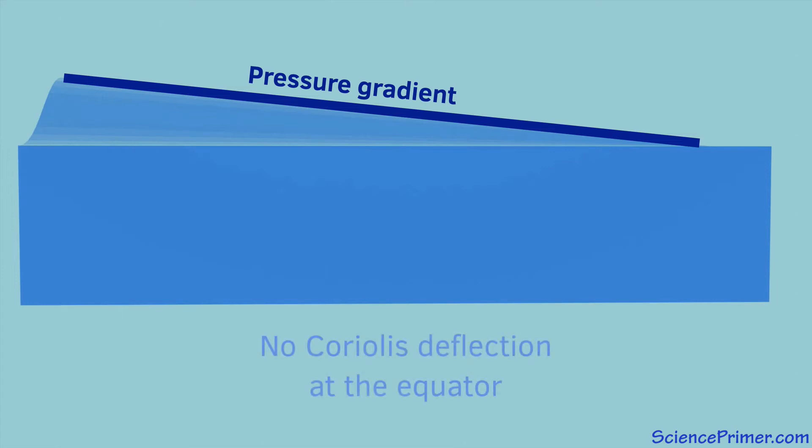Unlike the central gyres where water flowing down the pressure gradient turns due to Coriolis deflection, the water of the equator travels straight down the gradient forming the counter current.